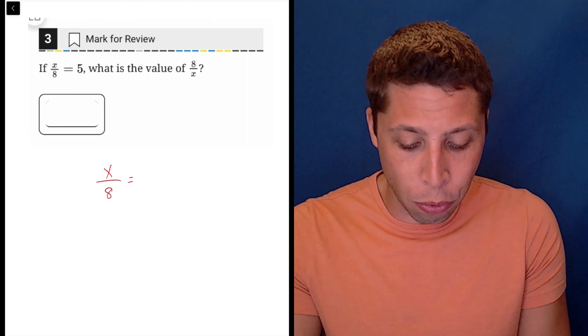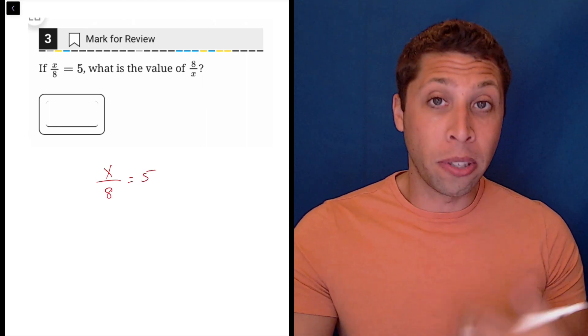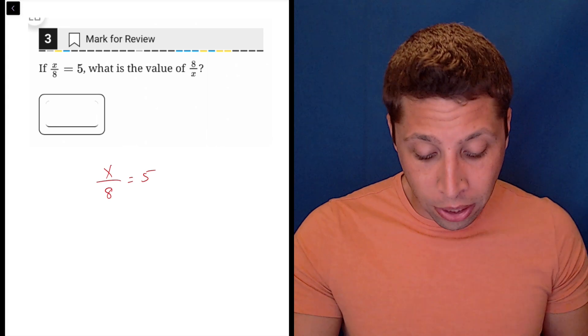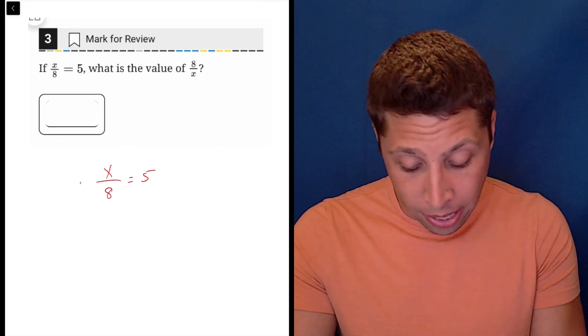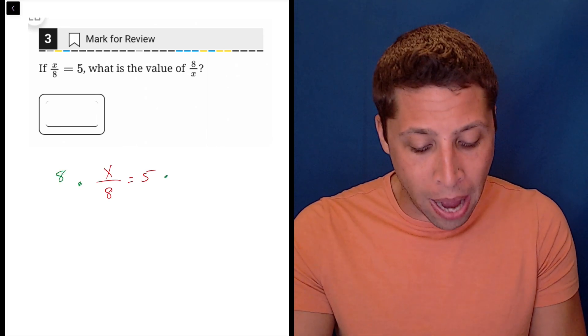So if you wanted to treat this as just a normal algebra question, you would see the equation and then say, all right, I want to get rid of the divided by eight, the over eight. So you would multiply both sides by eight.